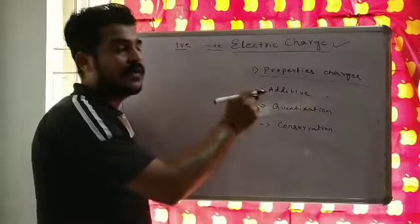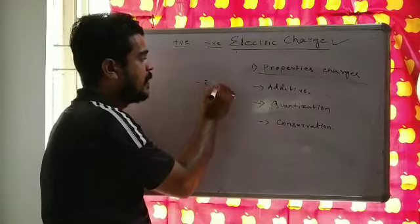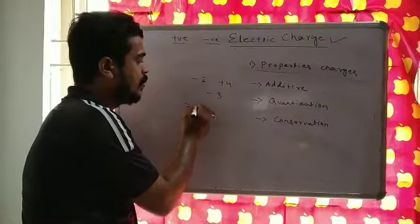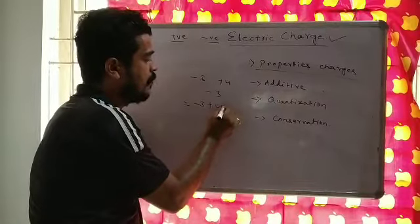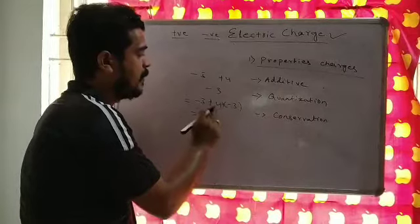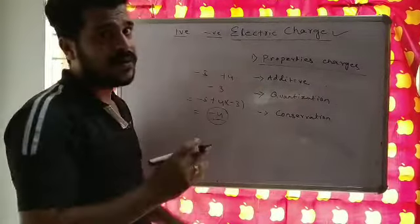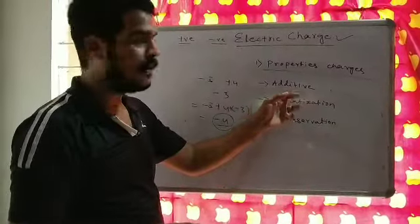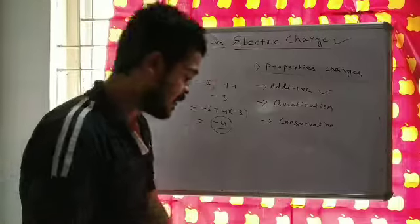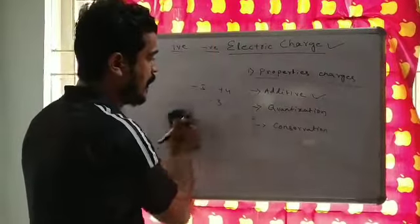Algebraic addition formula means if there are three charges — minus 5, plus 4, minus 3 — the total charge is minus 5 plus 4 minus 3, which equals minus 4. The same way you add in algebra is followed here in the addition of charges. This is the first property: you can add charges just like in algebra.